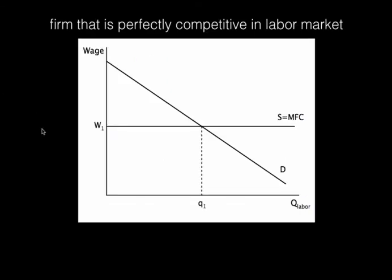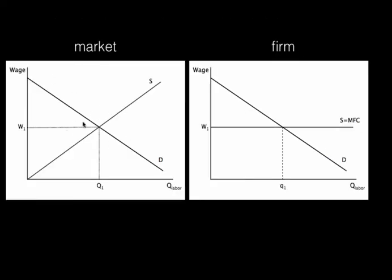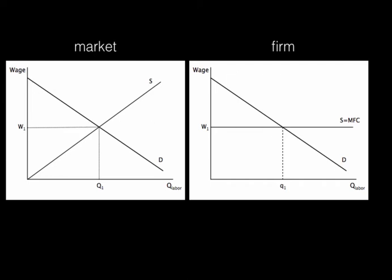That perfectly elastic supply of labor is also what we call marginal factor cost. Marginal cost is just the cost of one more unit — not one more unit of output, but one more unit of the factor, in this case labor. So the cost of one more unit of labor that this firm is hiring is just the wage, and it's equal to that perfectly elastic supply of labor the firm is facing.